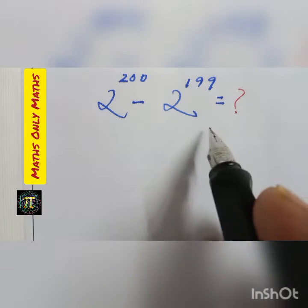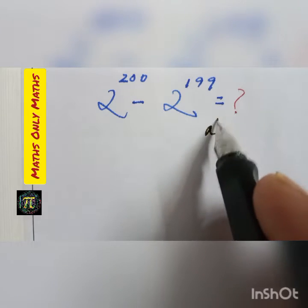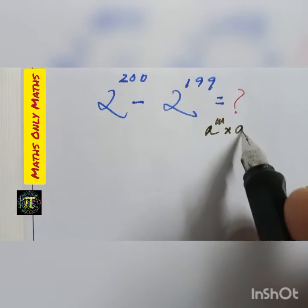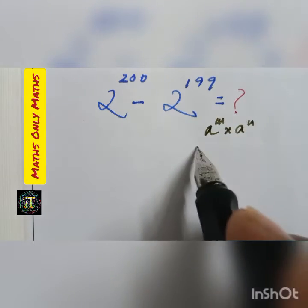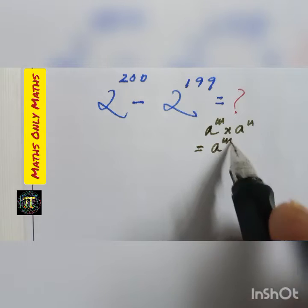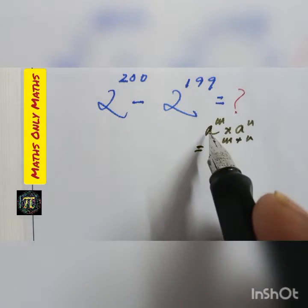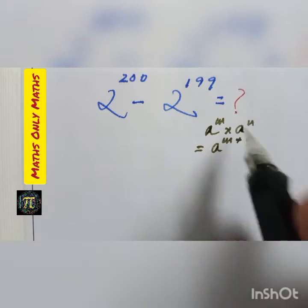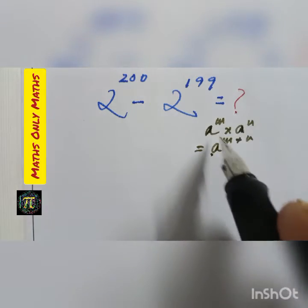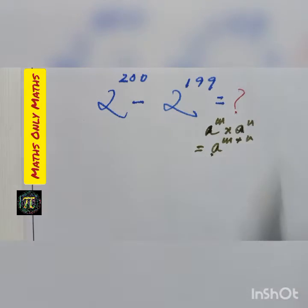According to the laws of exponents, a to the power m multiplied by a to the power n equals a to the power m plus n. When the bases are equal, we write the same base and add the powers: a^(m+n).